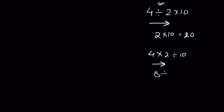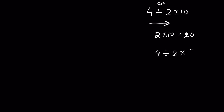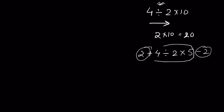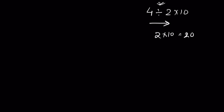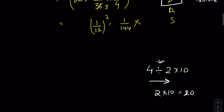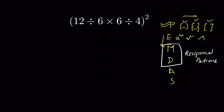If you have 4 divided by 2 times 5 and then addition or subtraction afterwards, the addition and subtraction will always be done after these two operations. Don't get confused — the left-to-right rule applies between division and multiplication. Here you can see that from left to right the first operation is division, so we do division first.